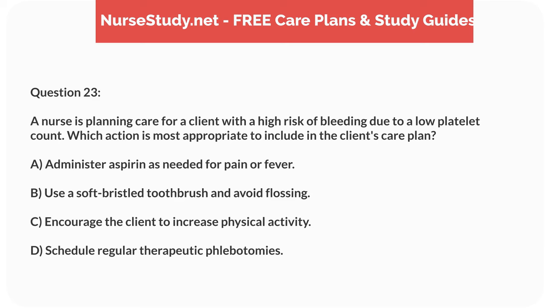Question 23. A nurse is planning care for a client with a high risk of bleeding due to a low platelet count. Which action is most appropriate to include in the client's care plan? A. Administer aspirin as needed for pain or fever. B. Use a soft bristled toothbrush and avoid flossing. C. Encourage the client to increase physical activity. D. Schedule regular therapeutic phlebotomies.